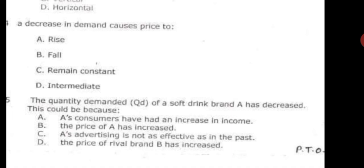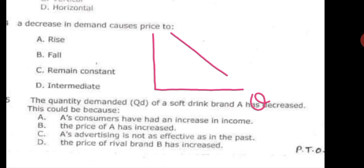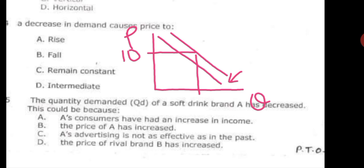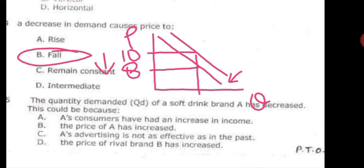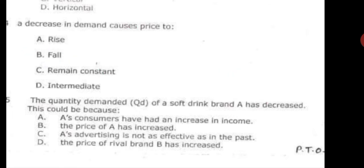The next question is: a decrease in demand causes price to — rise, fall, remain constant, or intermediate. The demand curve is always downward sloping. If demand decreases and shifts left, the new equilibrium price falls — for example from 10 to 8. So a decrease in demand causes price to fall. The correct option is B.